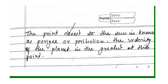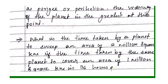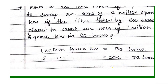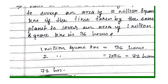Problem: What is the time taken by a planet to sweep an area of 2 million square kilometers, if the time taken by the same planet to cover an area of 1 million square kilometers is 36 hours? Since 1 million square kilometers is covered in 36 hours, 2 million square kilometers is covered in 72 hours.